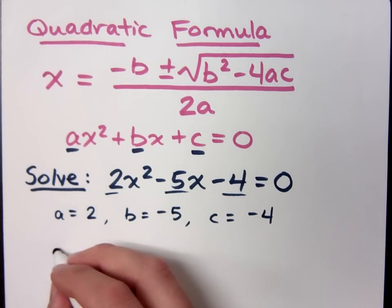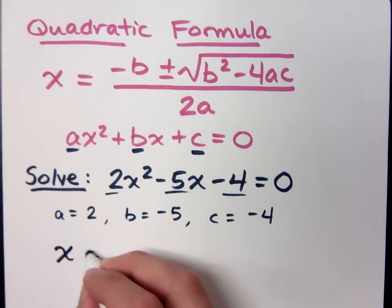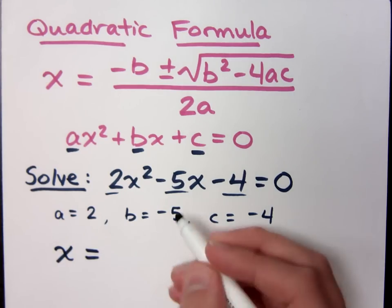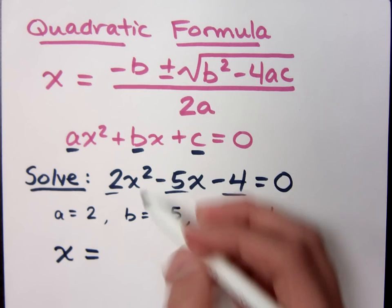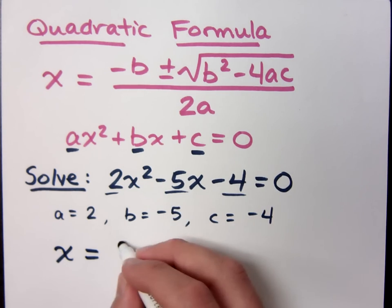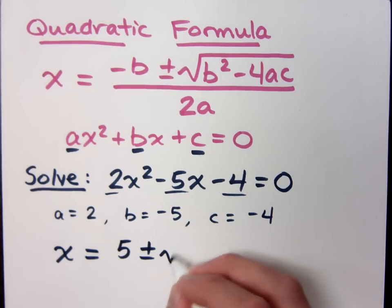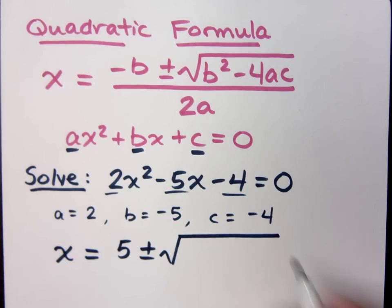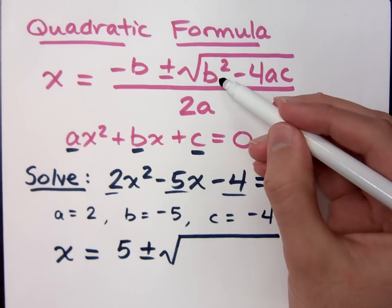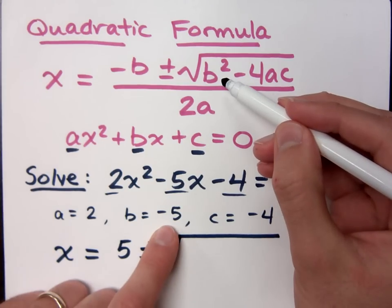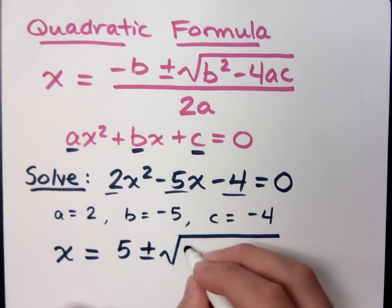So if I use the formula, x equals negative b. Well, since I have to do negative times b, my b is already negative, that's going to become a positive 5 plus or minus the square root. Now, I've got b squared, and if b is negative 5, then b squared is positive 25.